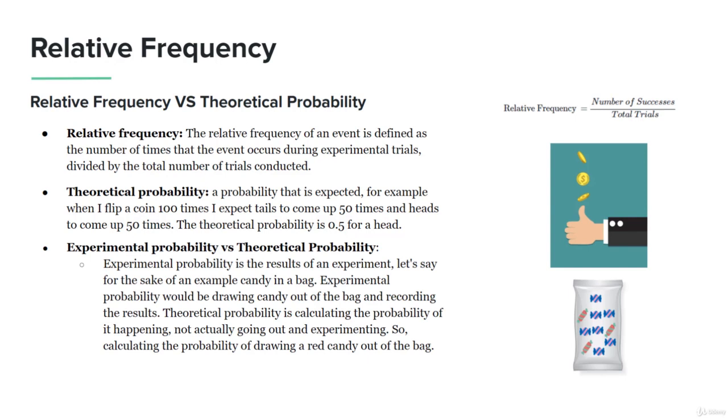Experimental probability is the result of an experiment. For the sake of example with the candy in the bag, the experimental probability would be drawing candy out of the bag and recording the results. Theoretical probability is calculating the probability of it happening, not actually experimenting - like calculating the probability of drawing a red candy out of the bag.